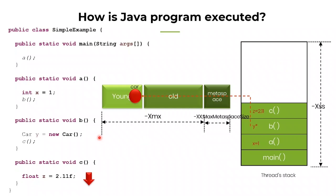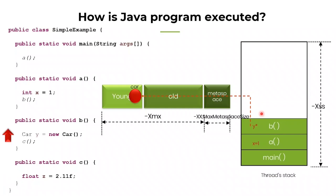Now let us come back to this program. The thread has completed executing method C and there are no more lines of code to execute. The thread will start to leave the method — it is going to exit method C. You see, the C method and its primitive data type z equal to 2.11 are there. The moment the thread exits method C, that stack frame is removed from the thread stack. C is gone and the local variable z 2.11 is also removed.